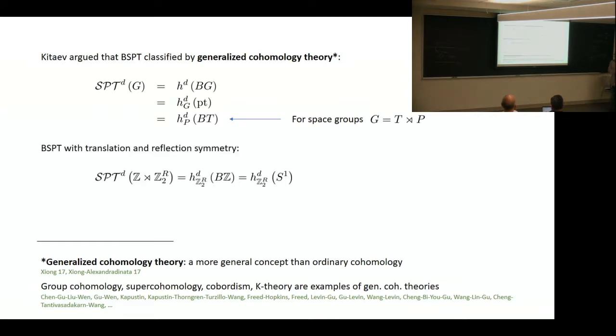In this talk, we will focus on SPT phases with translation symmetry and reflection symmetry. Here Z is the translation symmetry in a certain direction, and Z_2^R is the reflection symmetry in the same direction. Following the above formula, we can write this in terms of generalized cohomology theory as such.